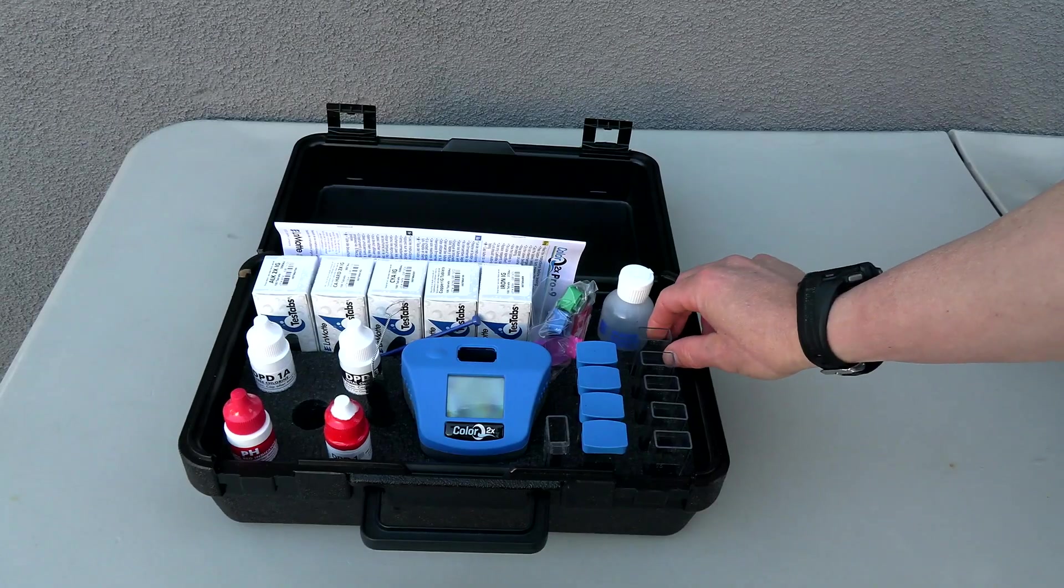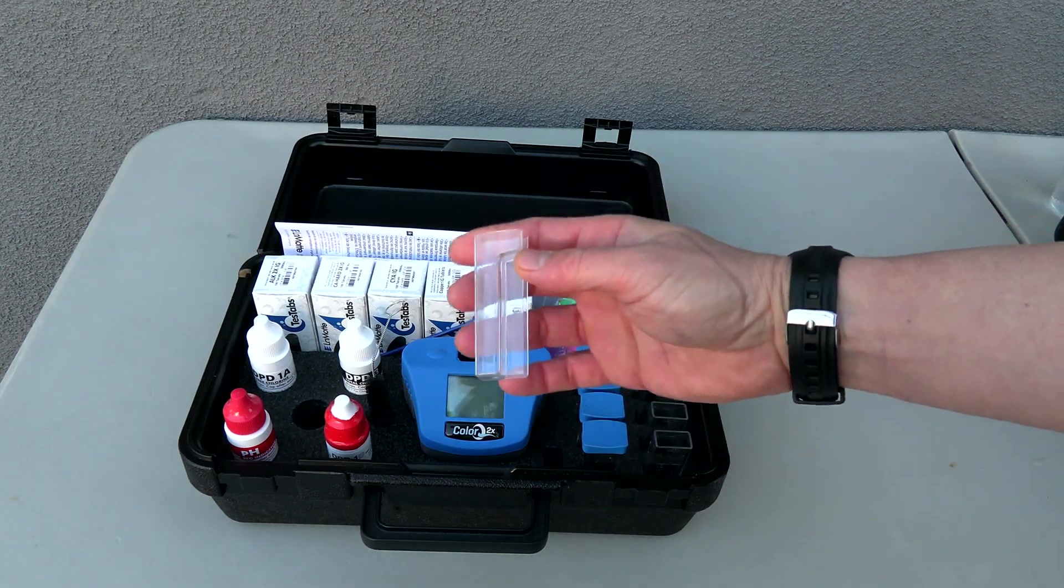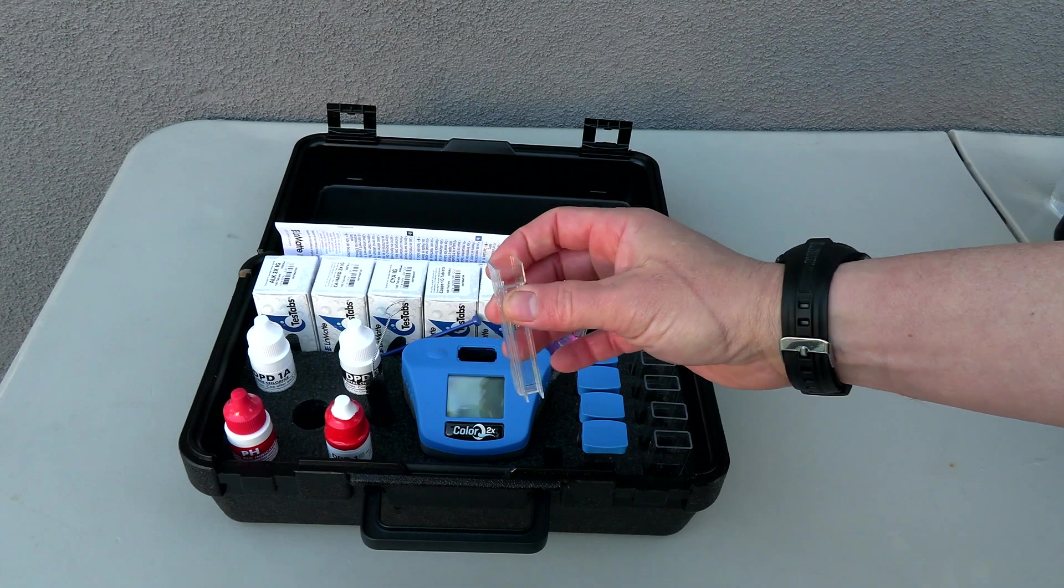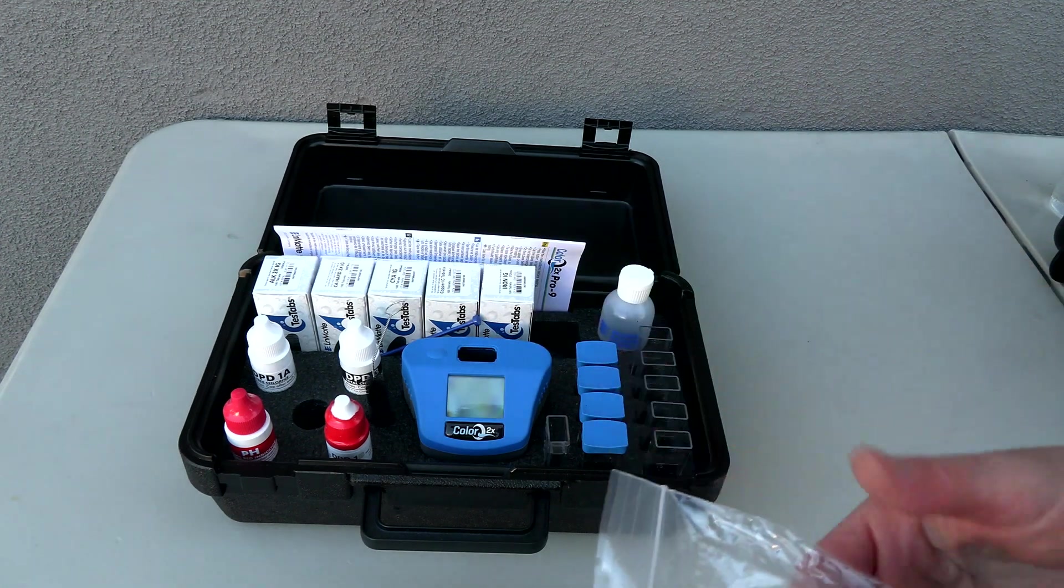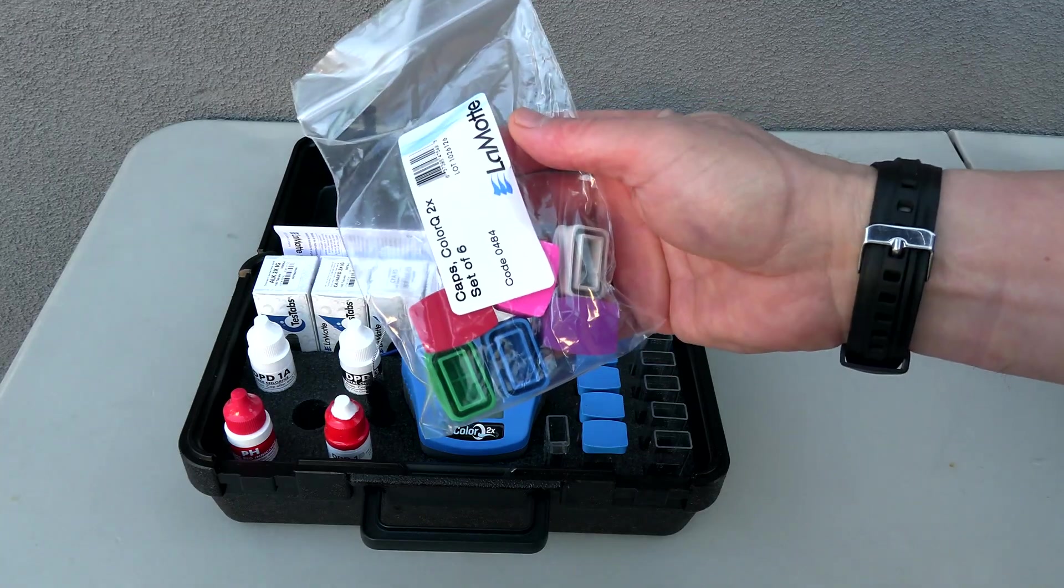Let me go over the contents of the kit. You have nine standard test tubes that are included and one additional specially designed test tube for the cyanuric acid test. Included are these four blue caps. You also have an additional six color-coded caps for your test factors.